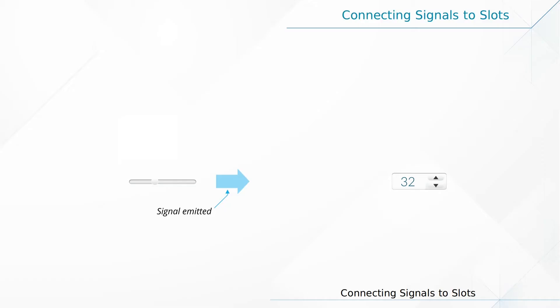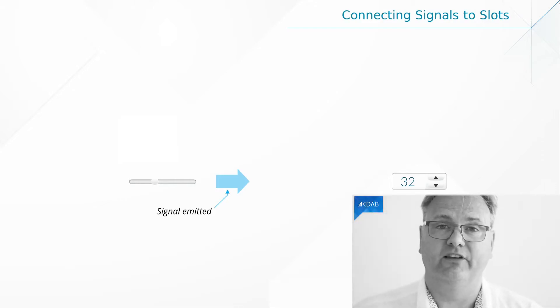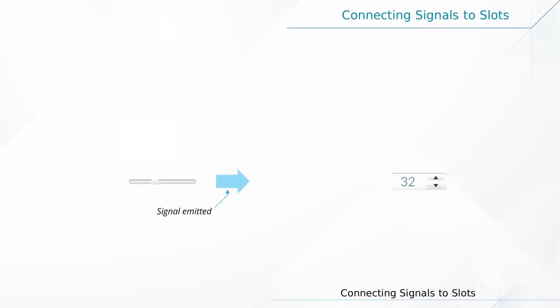I am the slider now and I'll say: my value has changed to 42! Does anybody care? Well, the slider doesn't care if anybody cares — it just announces to the world its value has changed to 42. What the spin box needs to do to listen to that signal being emitted from the slider is that it needs to implement a slot.